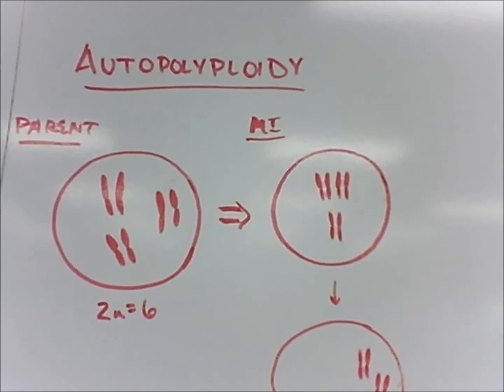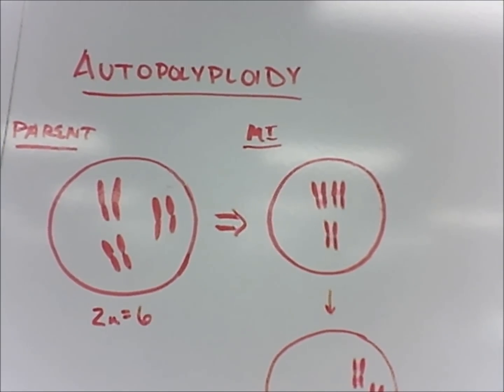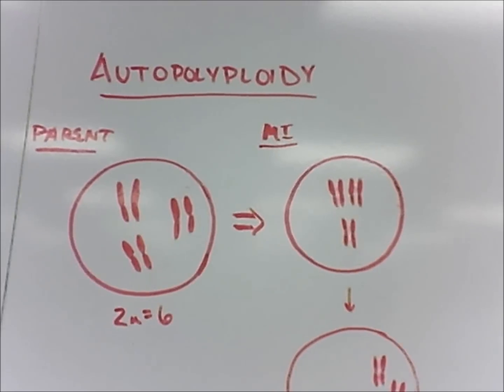An autopolyploid is an individual that has more than two chromosome sets derived from a single species.